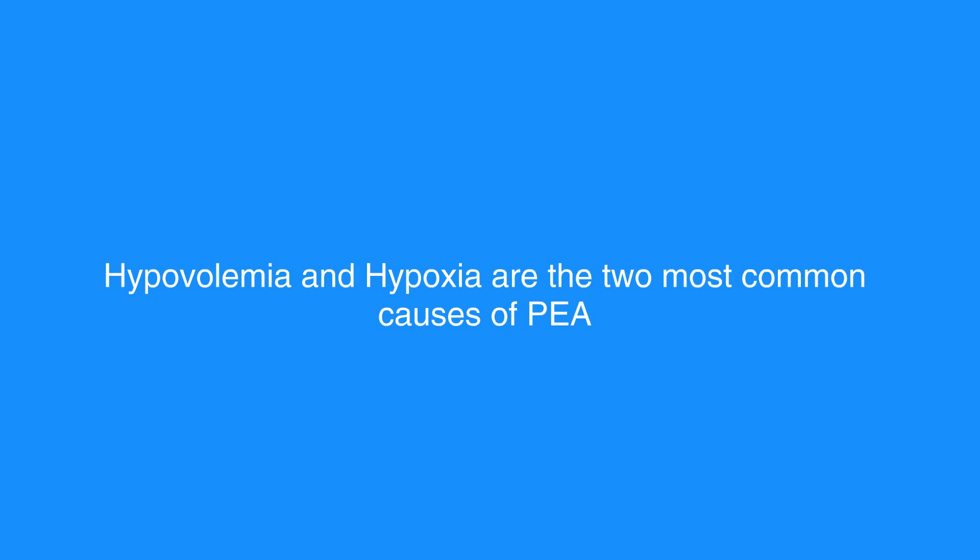Hypovolemia and hypoxia are the two most common causes of PEA. They are also the most easily reversible and should be at the top of any differential diagnosis. If the individual has return of spontaneous circulation or ROSC, proceed to cardiac arrest care. Atropine is no longer recommended in cases of PEA or asystole.